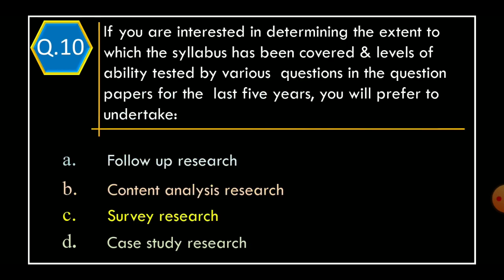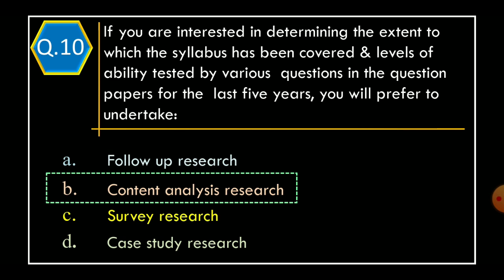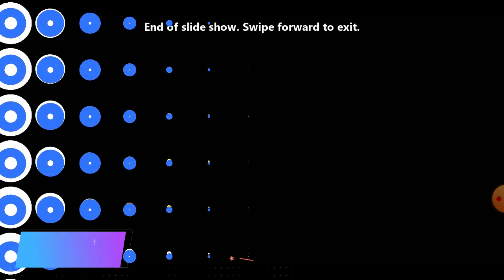Question 10: if you are interested in determining the extent to which the syllabus has been covered and levels of ability tested by various questions in the question paper for the last five years, you will prefer to undertake — Option A: follow-up research; Option B: content analysis research; Option C: survey research; Option D: case study research. The correct option is Option B: content analysis research. Thanks for watching.